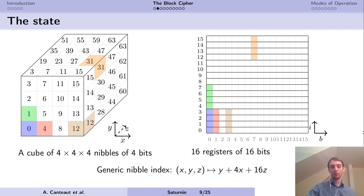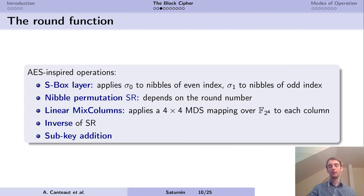If you're familiar with the AES, the operations that we apply in Saturnin look a bit the same, with little differences everywhere. We start with an S-Box layer, applying S-Box sigma0 to nibbles of even index and S-Box sigma1 to nibbles of odd index. These are two different S-Boxes, but they are actually the same up to a permutation of the output bits. Then we have a nibble permutation which depends on the round number. We have a linear mixed column that applies to every column in the cube, and this is an MDS mapping. We apply the inverse of this nibble permutation, and we have the subkey addition.